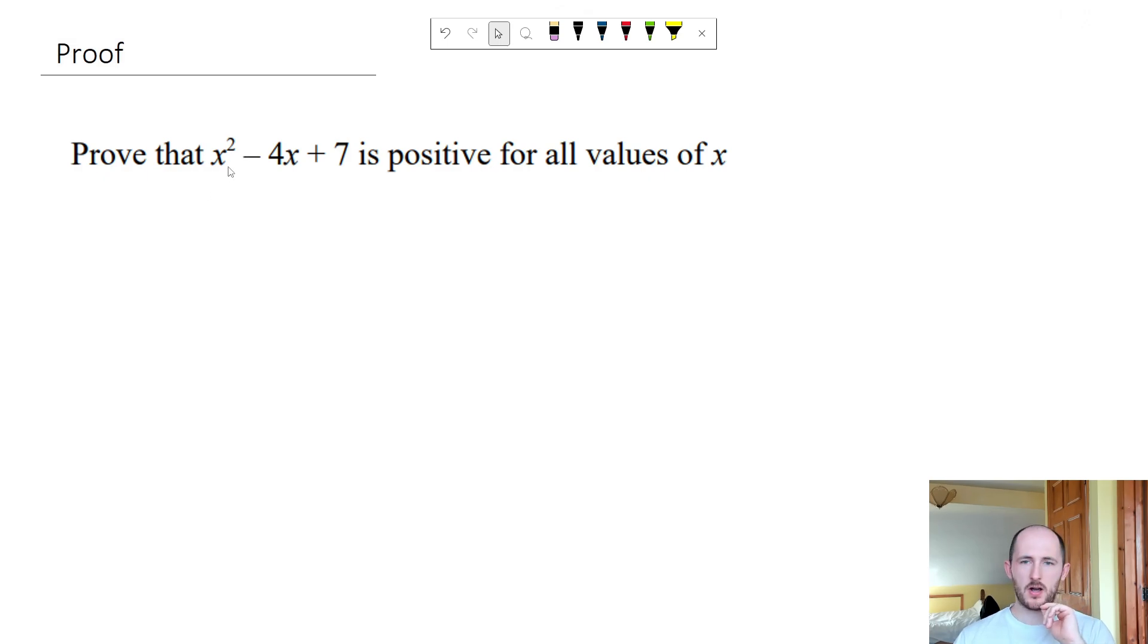First question just asks you to prove that x squared minus 4x plus 7 is positive for all values of x and this is something that funnily enough a few students aren't too sure about.